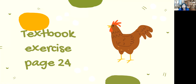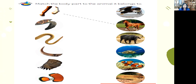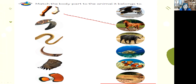Now let's have a textbook exercise. Open your book on page 24. You are going to draw a line to connect the body parts. Match the body parts of an animal to the animal it belongs to. Get your textbook now, everybody. Page 24 of your textbook.